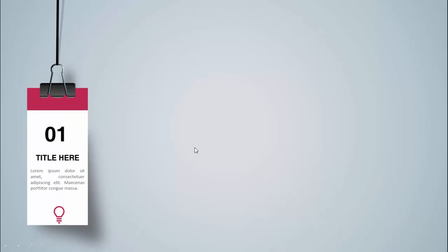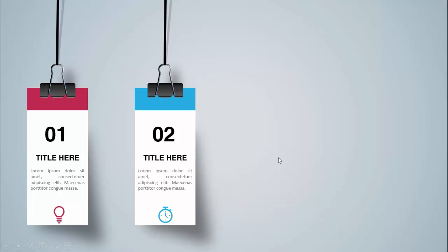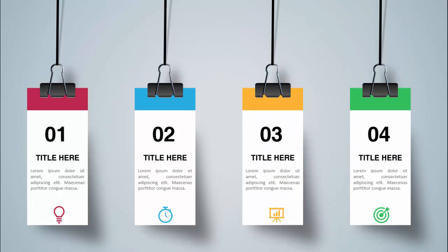In today's tutorial I'm going to show you how to create a four hanging options infographic slide in PowerPoint. When I click, the first option comes in. I've added a metal paper clip hanging with a thread, then a label with two different color combinations where you can add the option number, title, detailed text, and an icon below. There's also a shadow effect at the background. Clicking again shows the second, third, and fourth options with different color combinations.